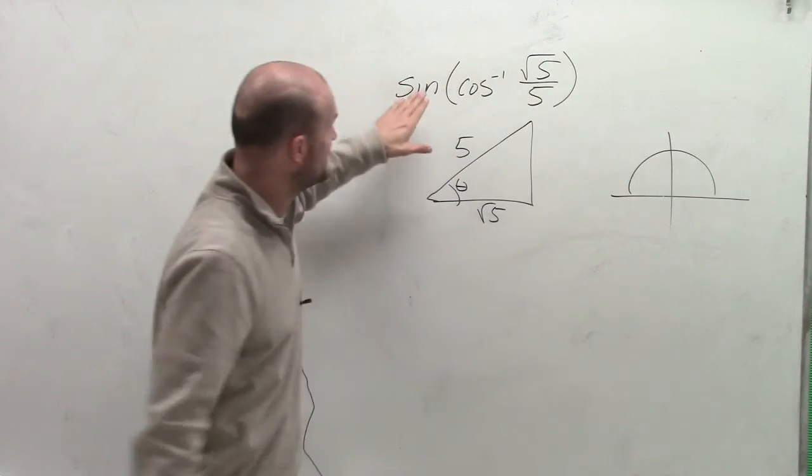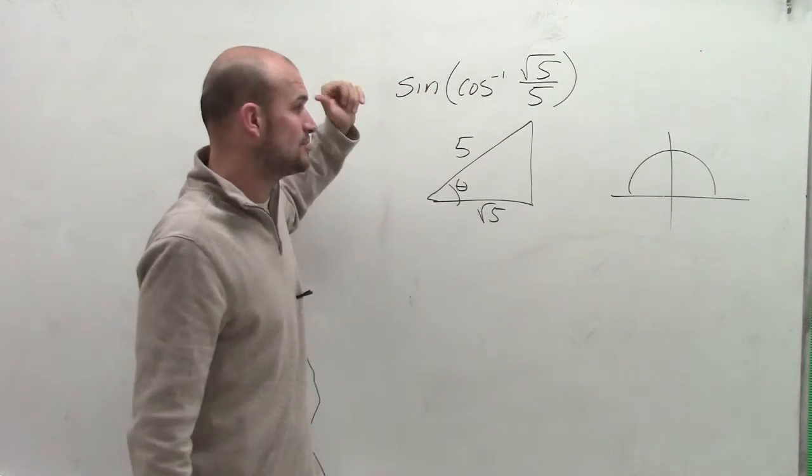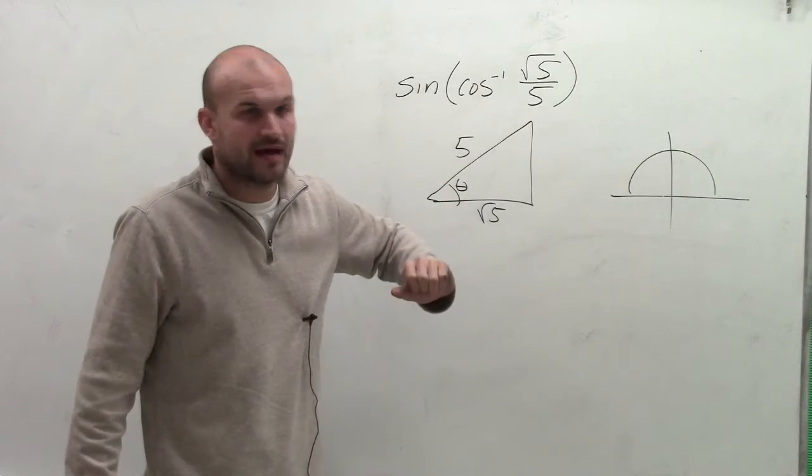So now, to be able to find the opposite side, because since we need to evaluate for sine, which is opposite over hypotenuse, we need to evaluate for the opposite side.